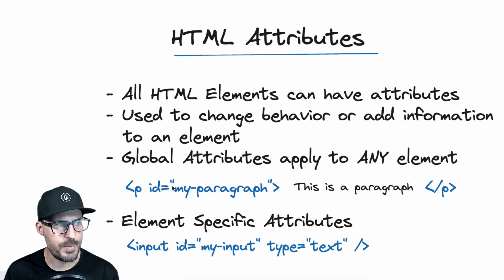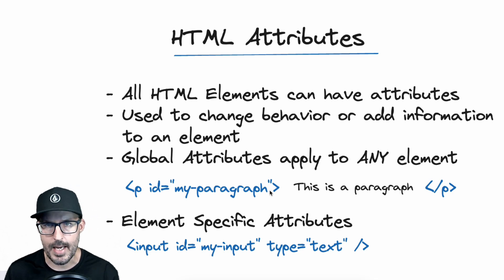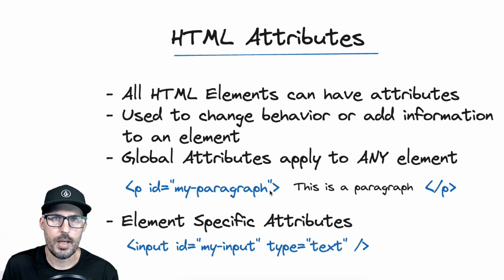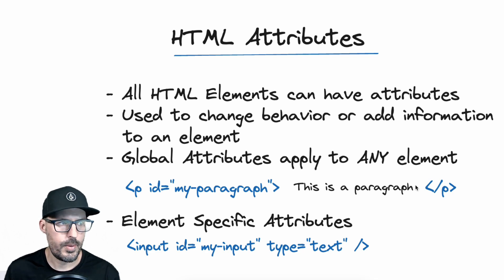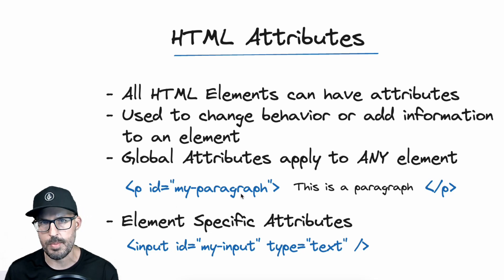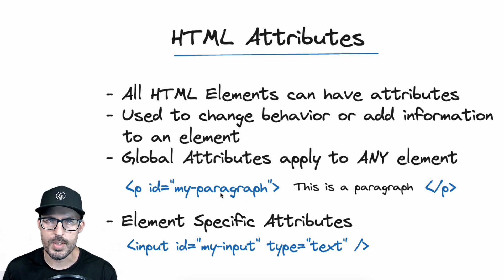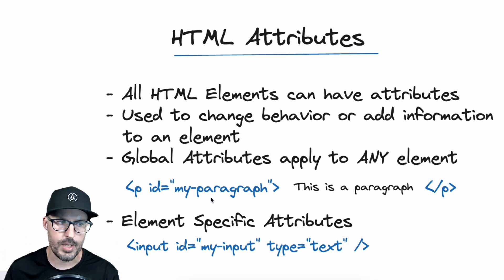There are attributes like 'disabled' — used for input elements — where you just add the attribute without providing a value. But for the most part, attributes take the form of name equals value in quotes, so we know where the attribute value starts and ends. You can have multiple attributes on an HTML element — an ID, a class, and so on. Also, per the HTML standard, IDs must be unique per page, so the same ID value can't appear on two different elements.